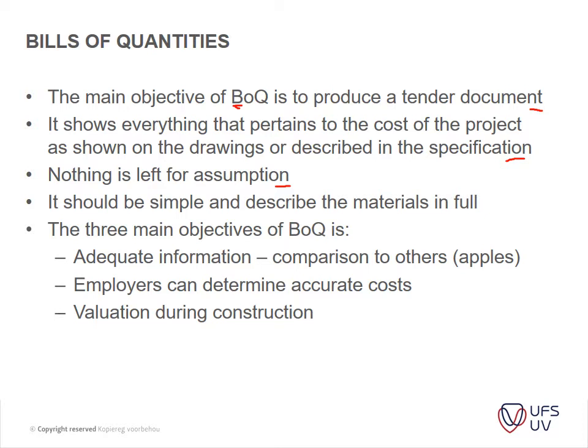The three main objectives of the bills of quantities are: to provide adequate information for comparison — the main thing is to compare apples with apples; employers can determine accurate costs since you have as much information as possible; and it allows valuation during the construction process, which is very important. If you only have a quote per square meter, it's difficult to determine exactly what to pay the contractor because you can't measure it against what he quoted.